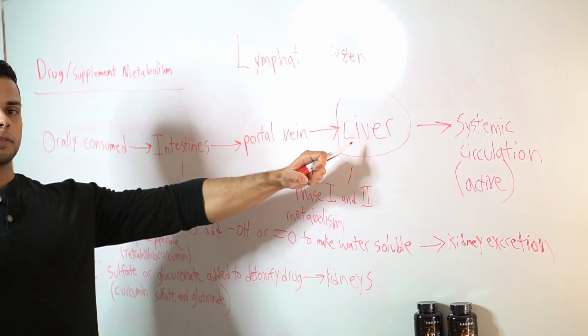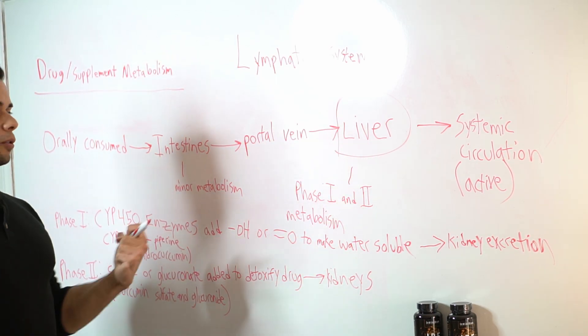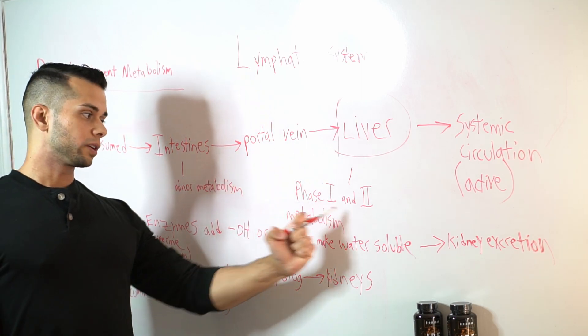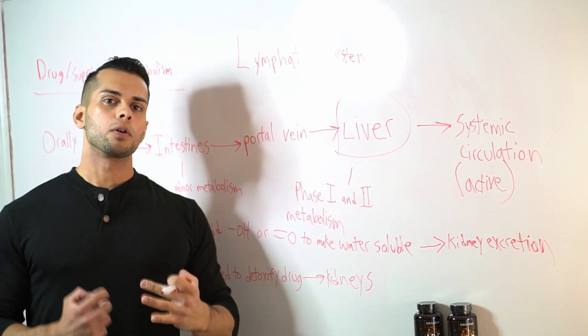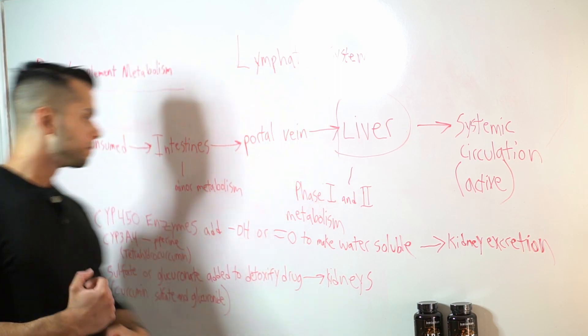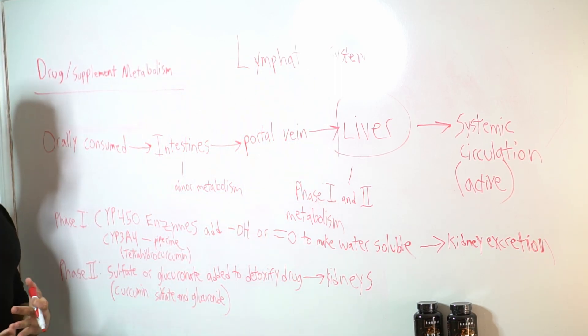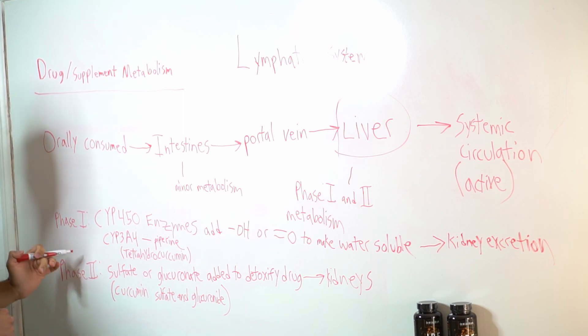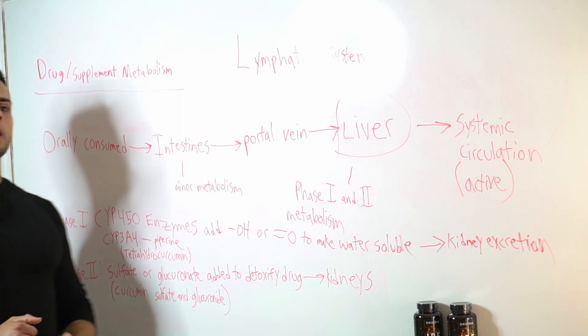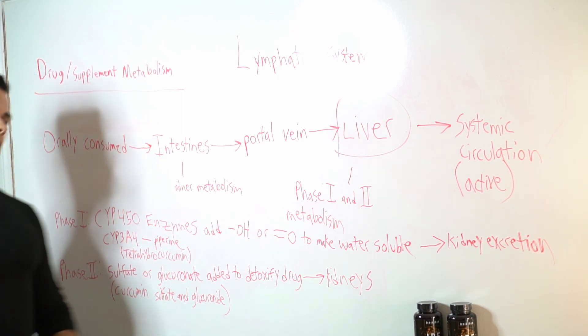most of the ingredient is broken down via phase one and two metabolism, resulting in poor bioavailability products. So let's look a little bit deeper at what phase one and phase two metabolism is composed of exactly.